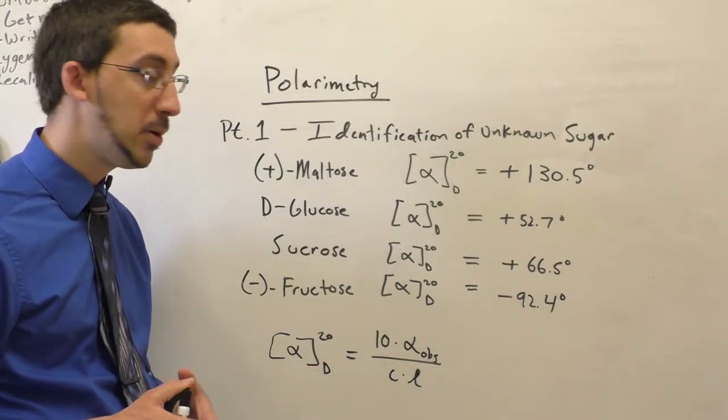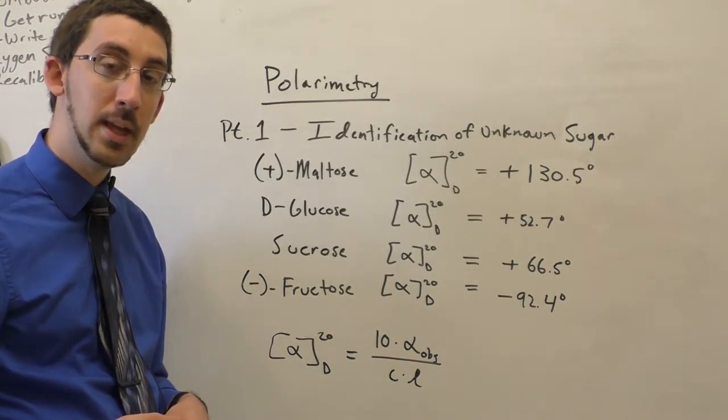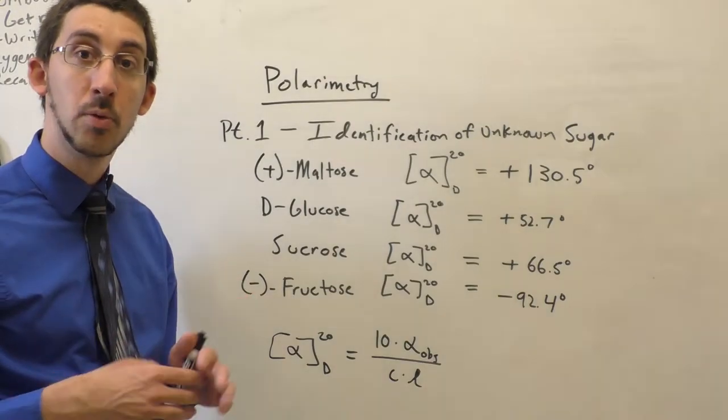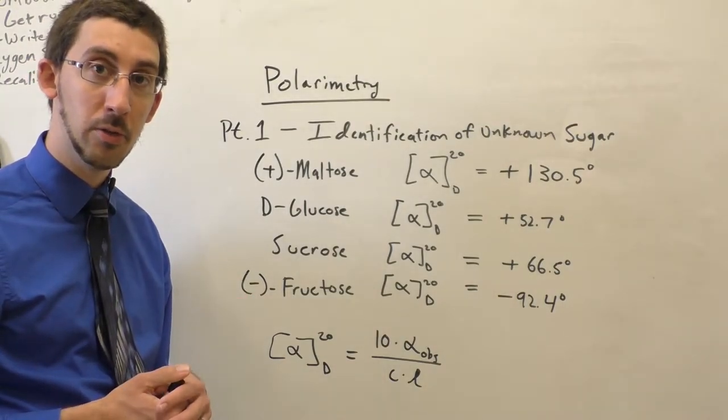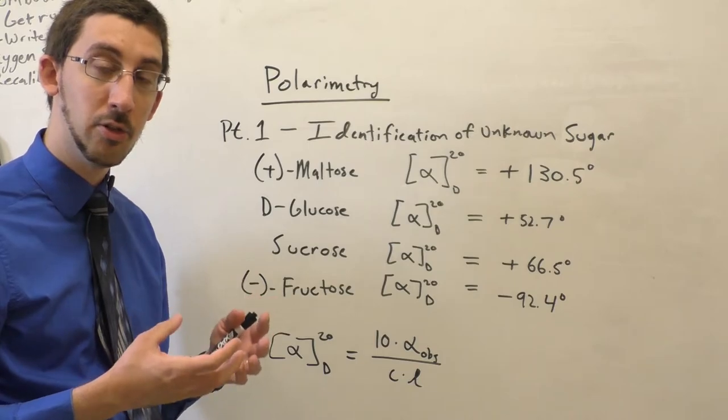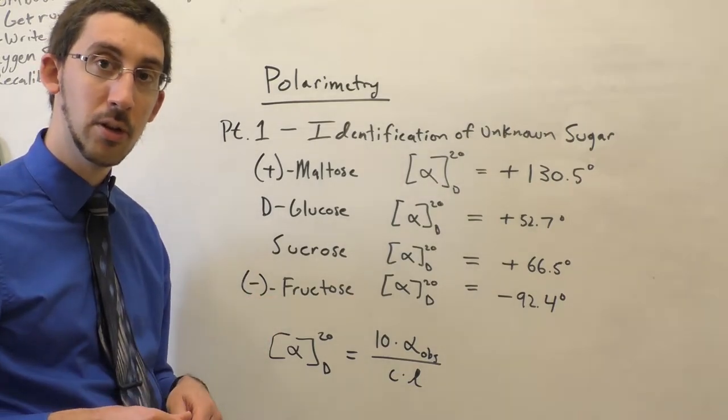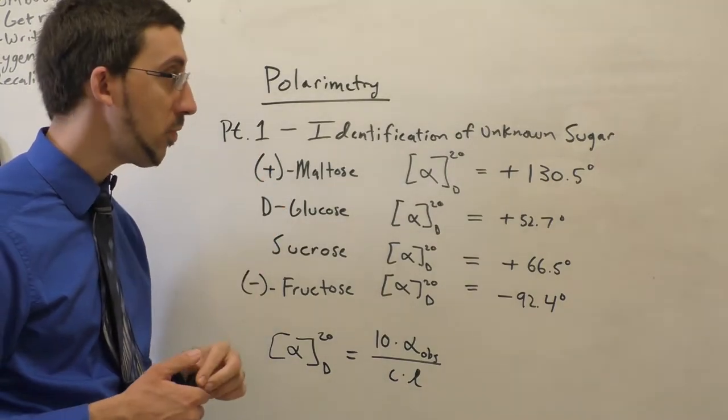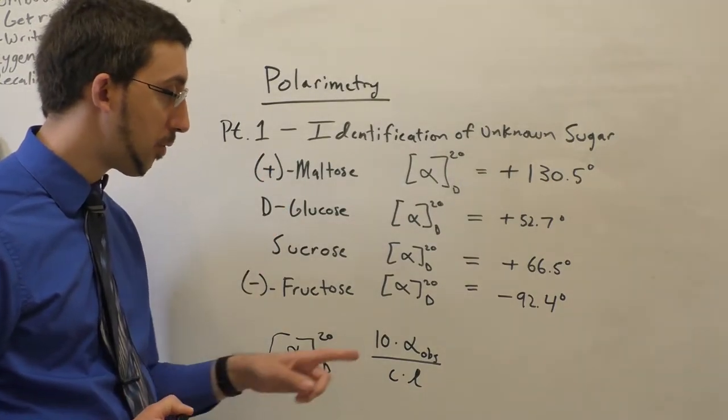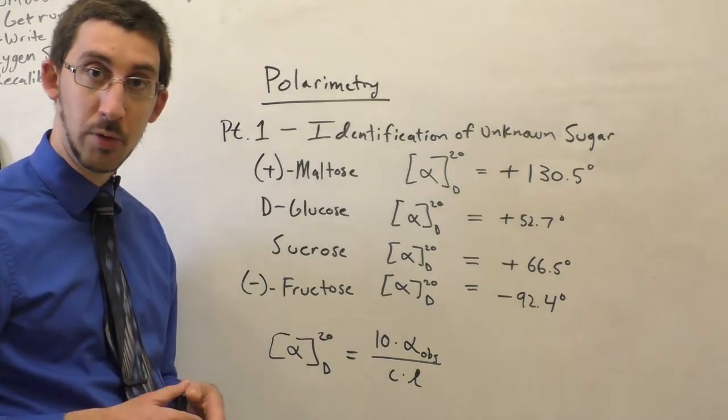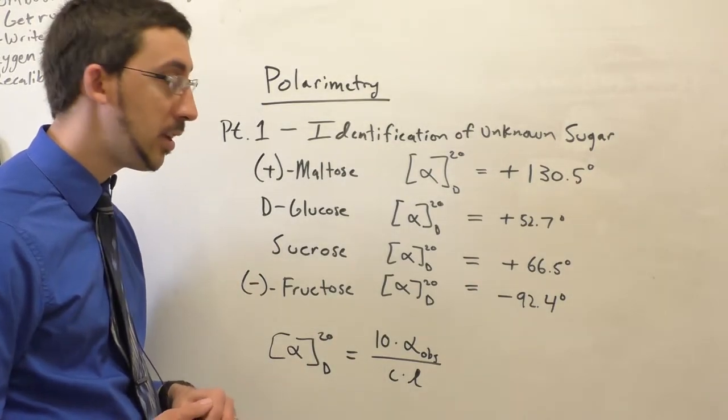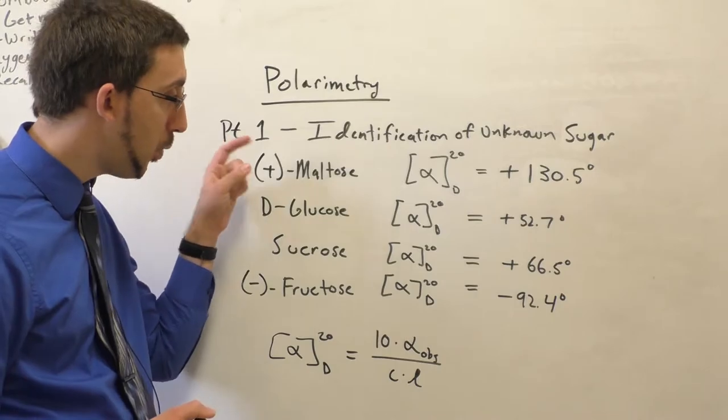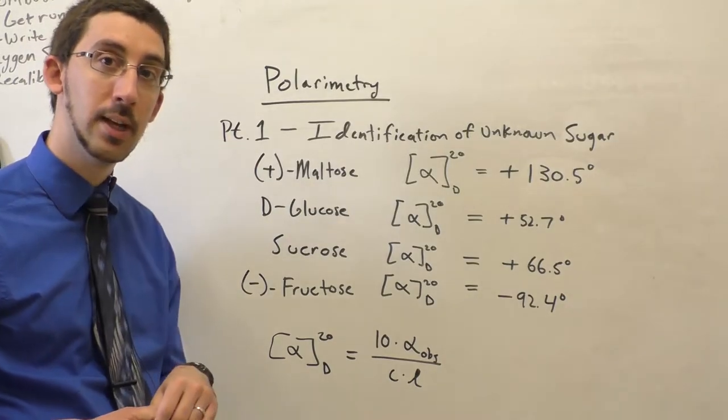And so the first part of this experiment is we're going to measure the observed rotation for our unknown solution. We're going to take the unknown sugar, make up a solution of this, and then measure the optical rotation using the polarimeter. And then we will convert that observed rotation to a specific rotation and use that value to identify which of these four sugars it is.